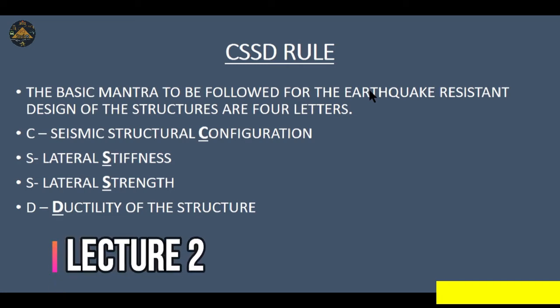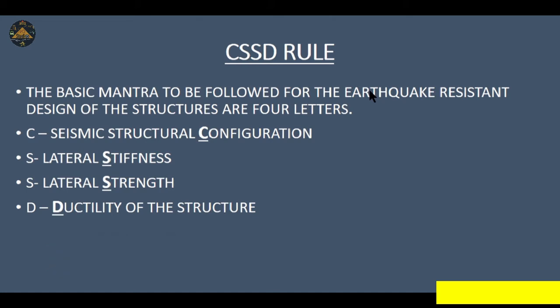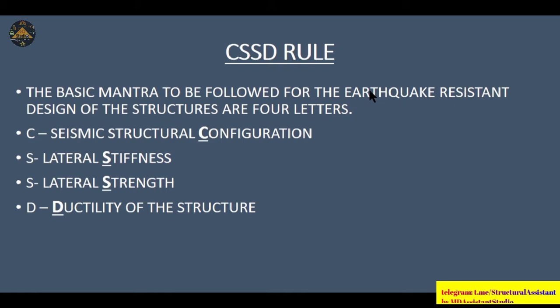Every structural engineer or designer should follow the CSST rule for earthquake-resistant design of structures. CSST stands for Configuration, Stiffness, Strength, and Ductility. These four golden words should always be remembered by the structural designer: the building should have good seismic structural configuration, good lateral stiffness, good lateral strength, and good ductility.